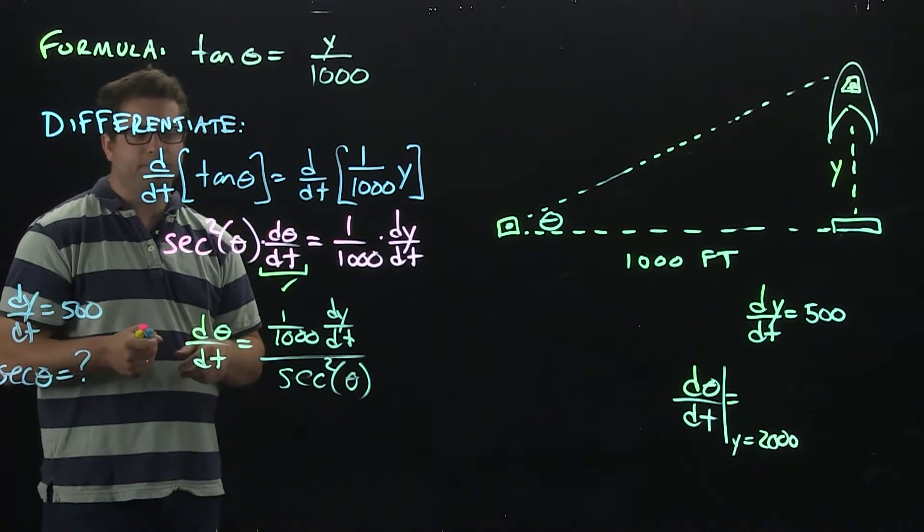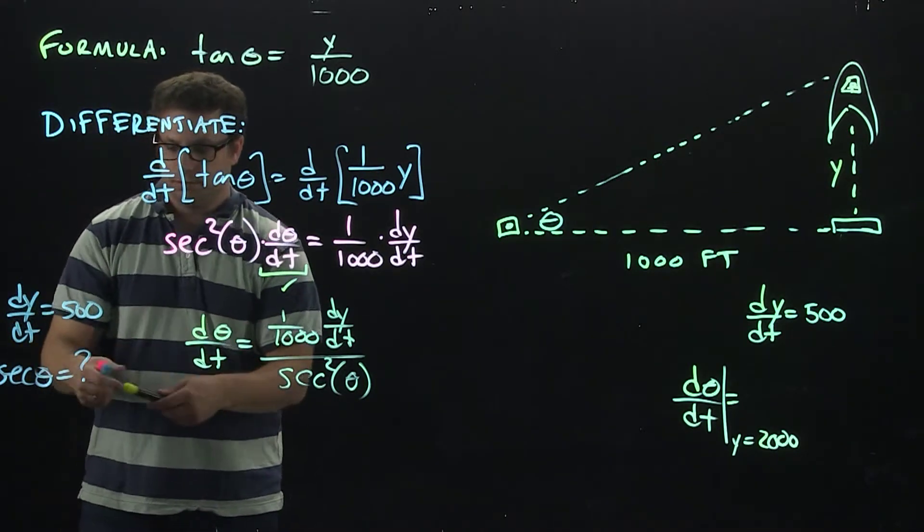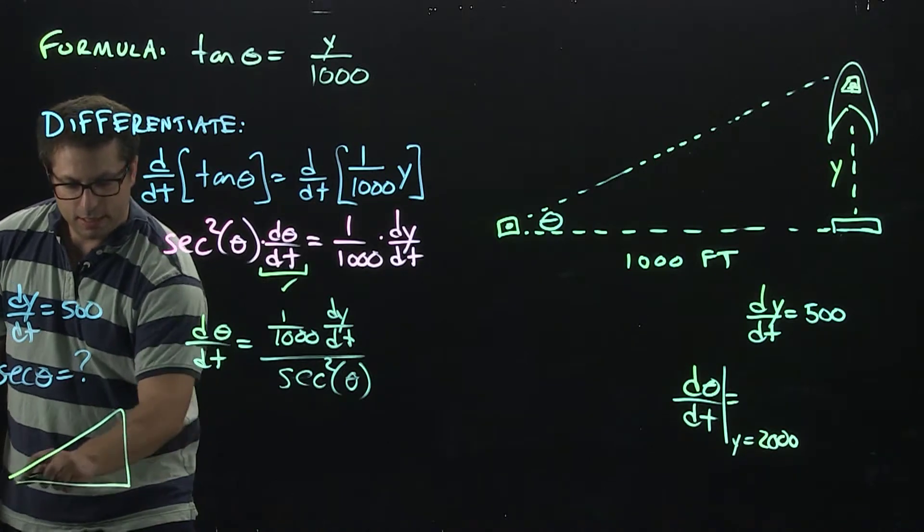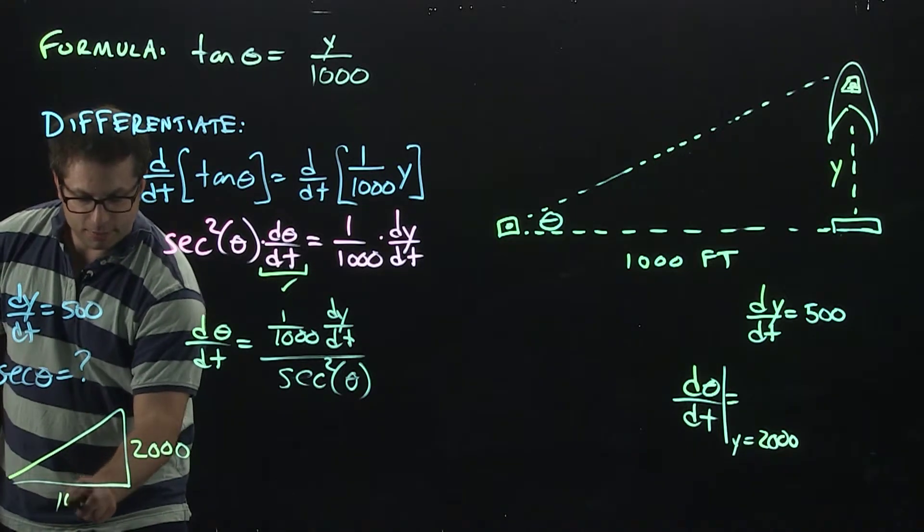The easiest way of doing that is to complete the triangle, because now I know that the height of the rocket is 2,000, and that's going to be 1,000.